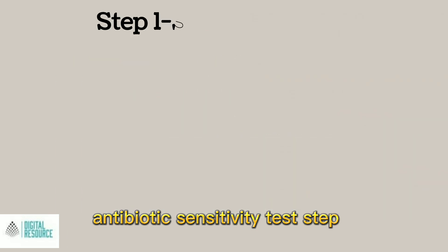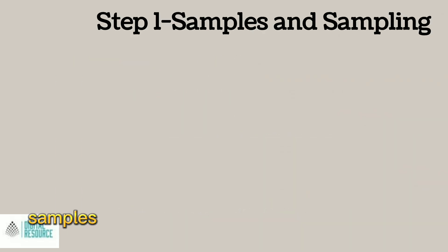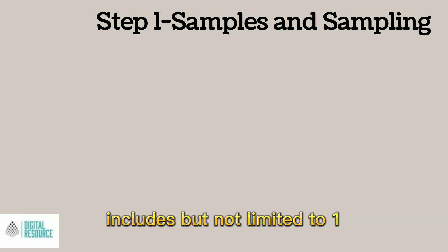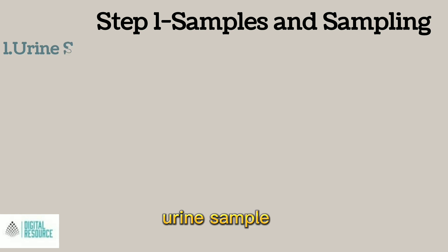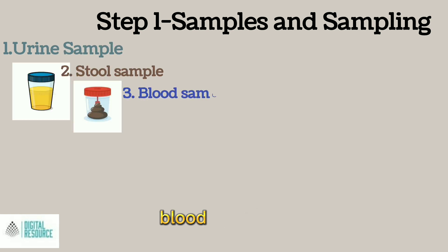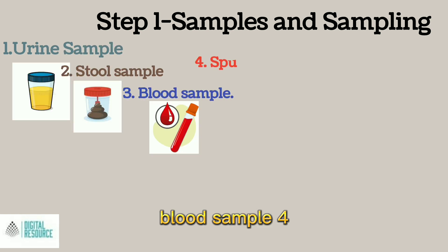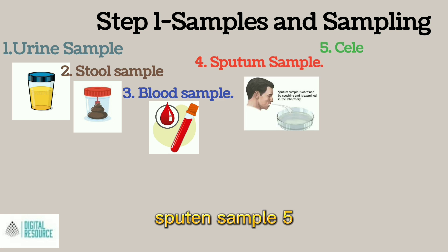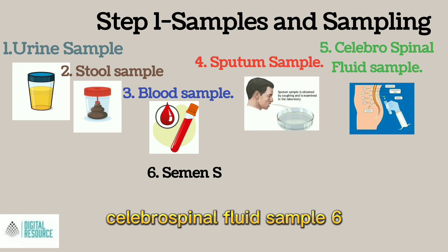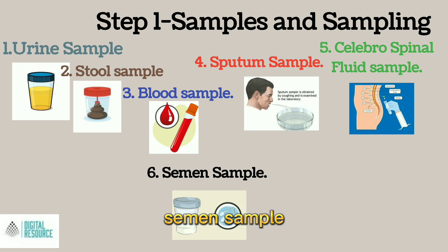Step 1: Sample and Sampling. Samples are collected carefully and aseptically. Microbiological samples include but are not limited to: 1. Urine sample, 2. Stool sample, 3. Blood sample, 4. Sputum sample, 5. Cerebrospinal fluid sample, 6. Semen sample.